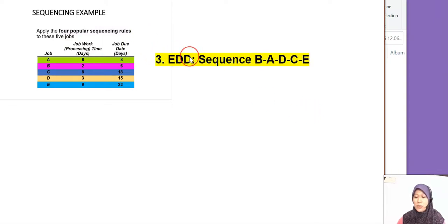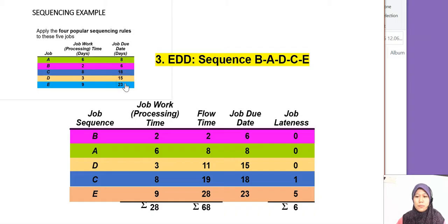And then the last rule that we're going to do is EDD. It means earliest due date. So we are looking at the due date here. We will arrange by the due date. So which one is the first one? It's B, and then followed by A, and then we have D, and then we have C, and then we have E. So B, A, D, C, E. We're going to put here on the job sequence and just follow the job processing time. And also you have to put the due date based on each job here. Now we're going to do the flow time: 0 plus 2 is 2, 2 plus 6 is 8, 8 plus 3 is 11, 11 plus 8 is 19, 19 plus 9 is 28.